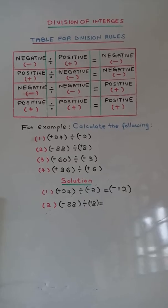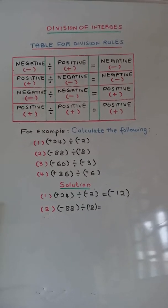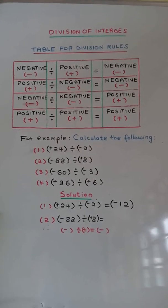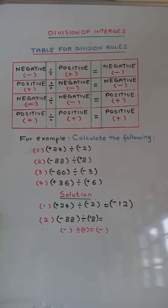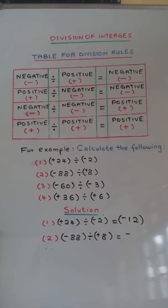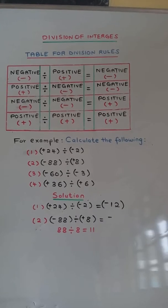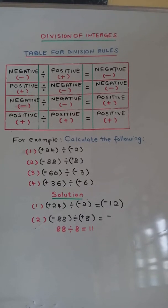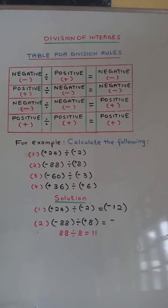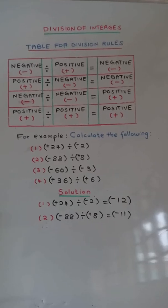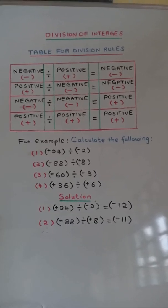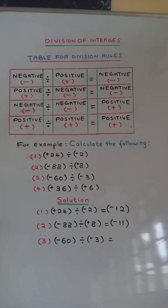Number 2: negative 88 divided by positive 8. Negative divided by positive is equal to negative. 88 divided by 8 is equal to 11, so the answer is negative 11.